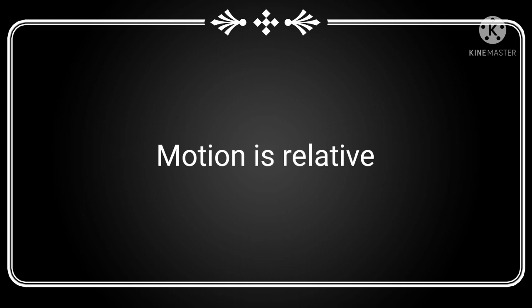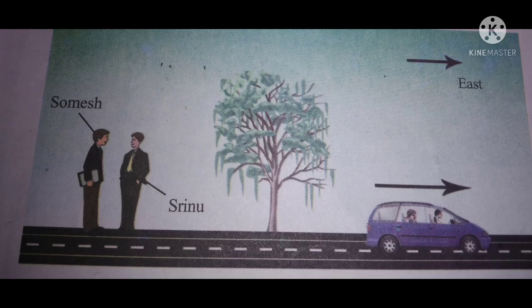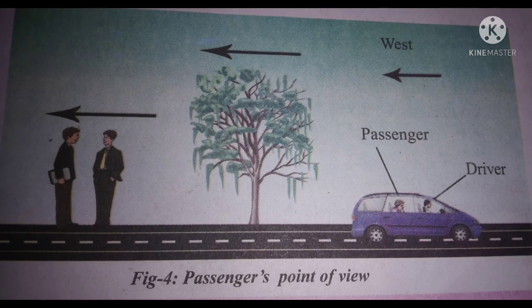Like the above examples, motion is also relative to the observer. According to Sommesh and Srinu, the trees are at rest and the car is in motion. It shows that the position of the car, the passenger, and the driver are changing with time. For the driver and the passenger moving in the car, they seem to be at rest and their surroundings are in motion.